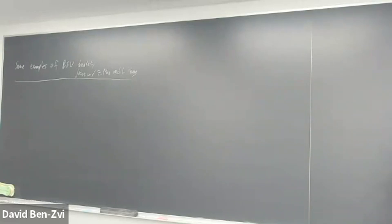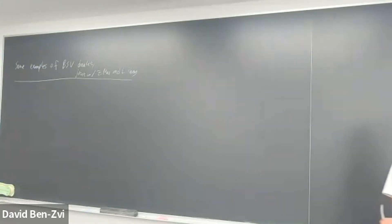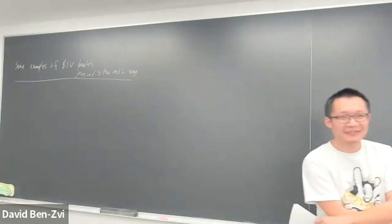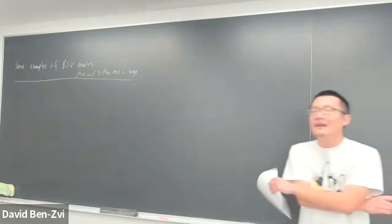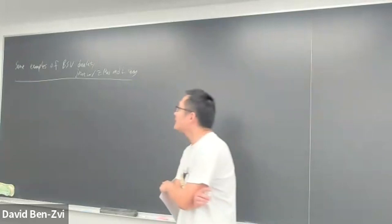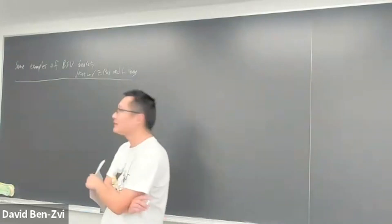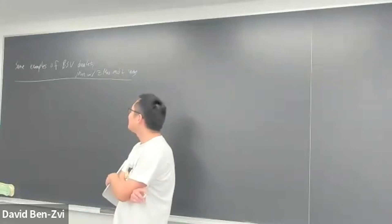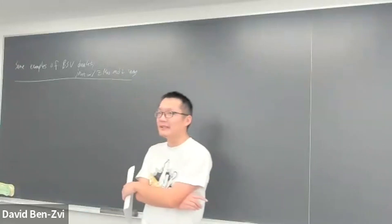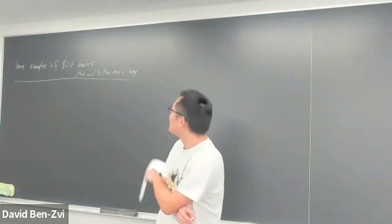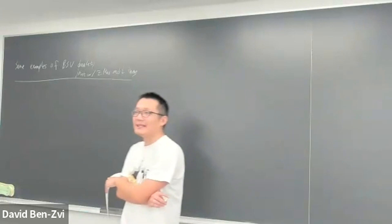We're extremely pleased to have Chen Wan from Rutgers, who's going to tell us some examples of BSD duality. Thank you for the introduction and for the invitation. Happy to be here. Today I'm going to talk about some examples of the so-called relative Langlands duality, or I'll just call it BSD duality. Everything I talk about today is joint work with Mao and Lei Zhang.